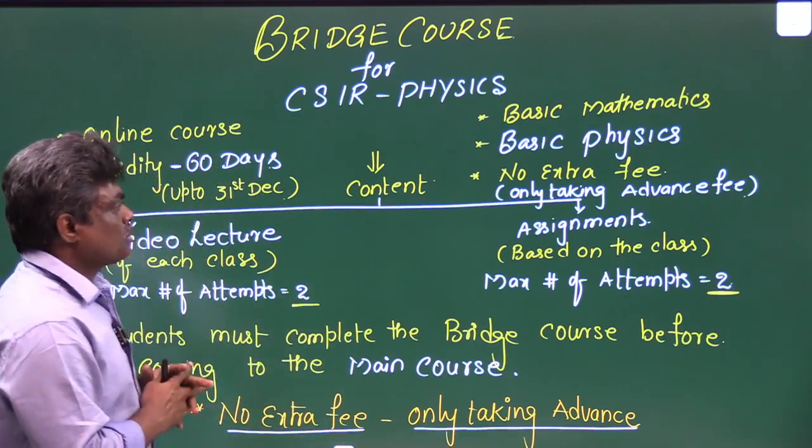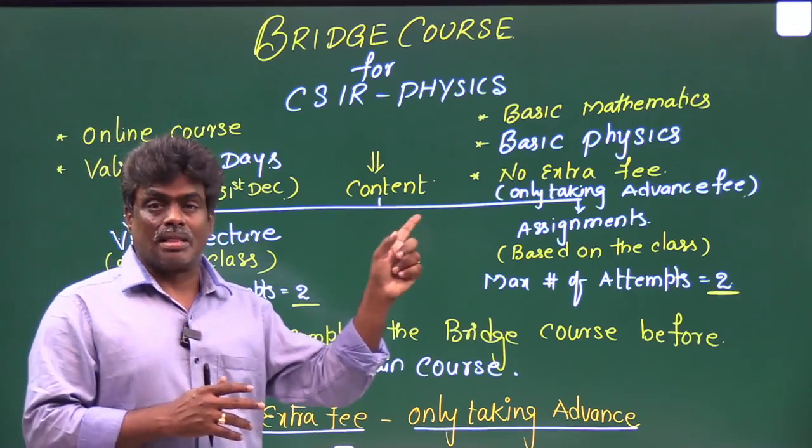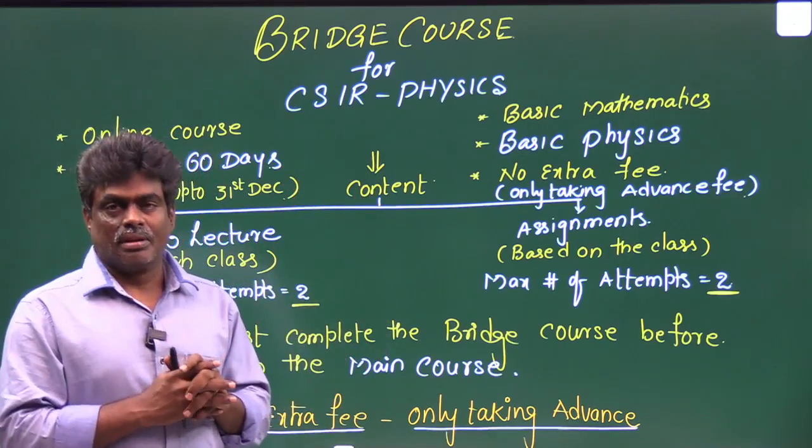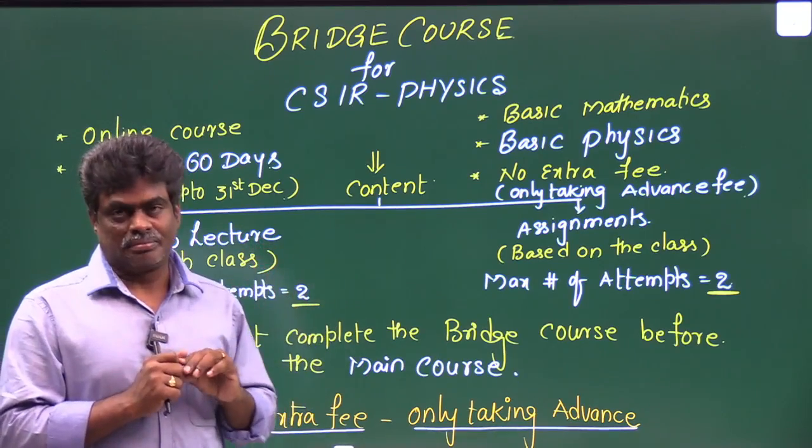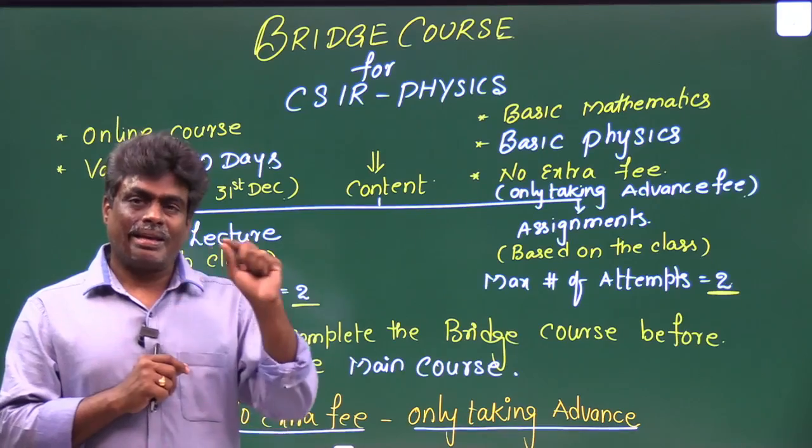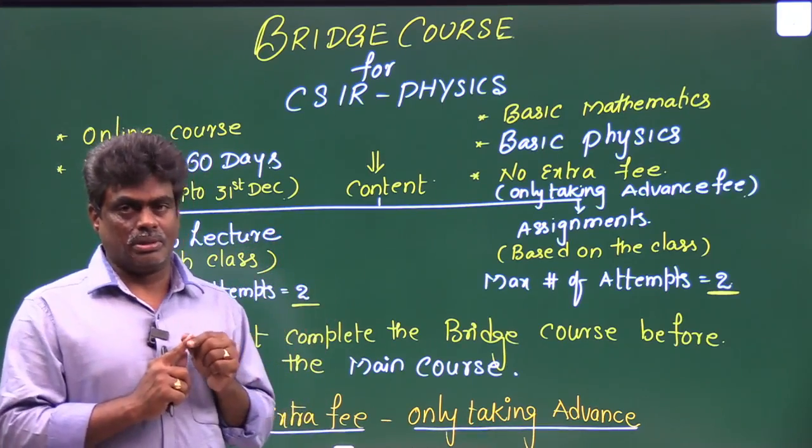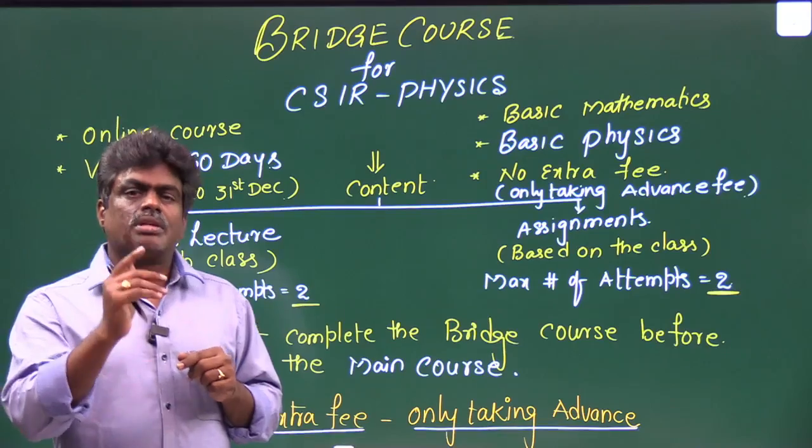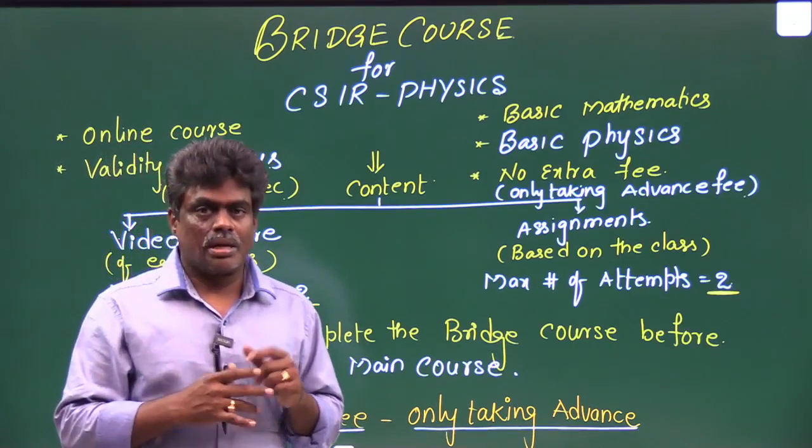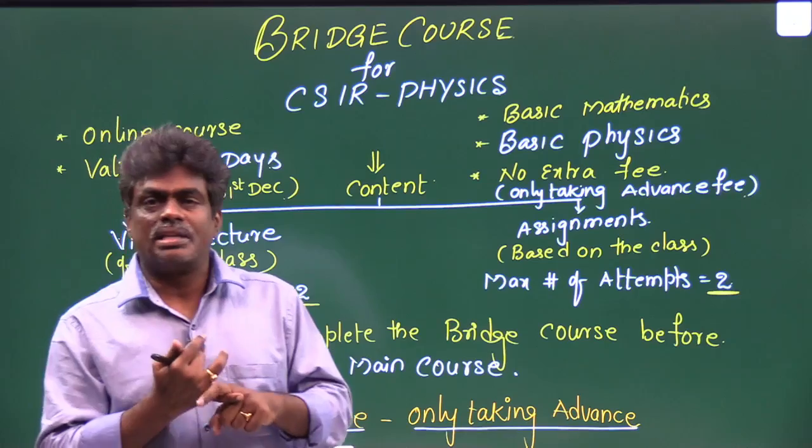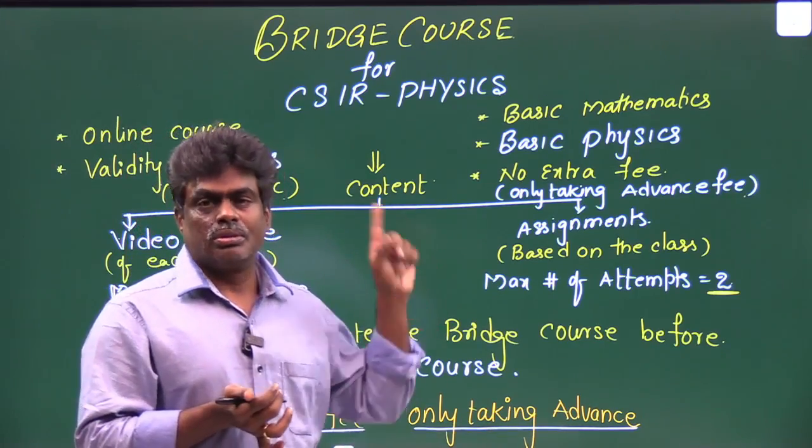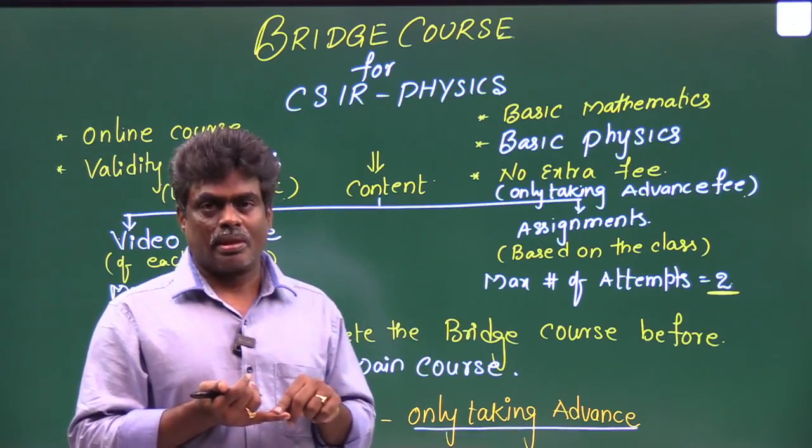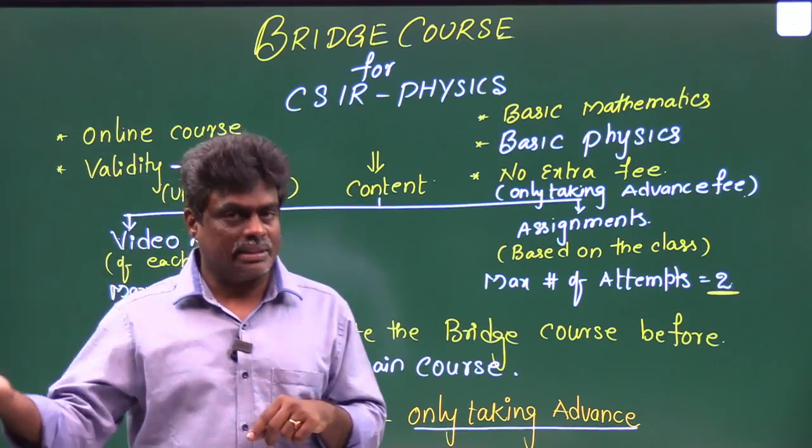It's a completely online course which contains basic mathematics and basic physics. The most important thing is it's completely free. We are not taking any extra fees for this bridge course. We are just taking the advance. While doing the registration you have to pay one thousand rupees for confirmation and four thousand rupees for this bridge course.